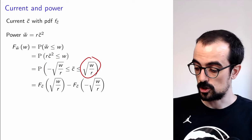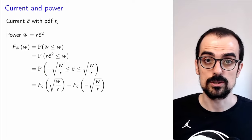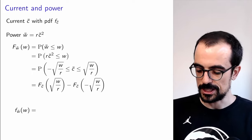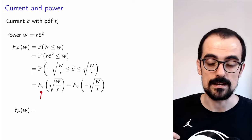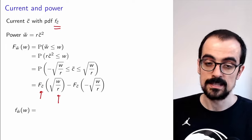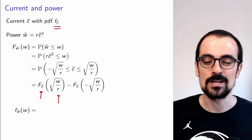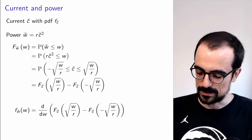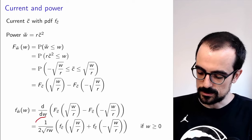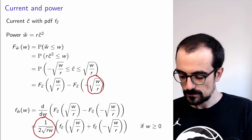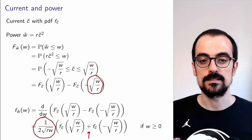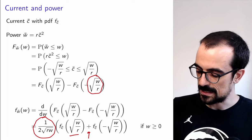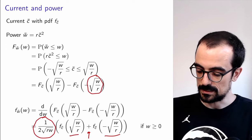Now if we want the PDF of the power, we just differentiate the CDF. What does this give us? We differentiate — the derivative of the CDF is just the PDF of the current, which we know — and we differentiate the argument using the chain rule for the square root. What comes out is the PDF evaluated at √(W/R) plus the PDF evaluated at -√(W/R), multiplied by the derivative of √(W/R), which is proportional to 1/√W.